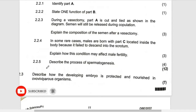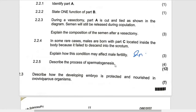Describe the process of spermatogenesis. We have to explain it in the modern way according to our examination guidelines — not like the way it was explained in previous books. Under the influence of testosterone, the diploid cell, which is 2N, found in the seminiferous tubule will undergo meiosis to form haploid sperm cells.